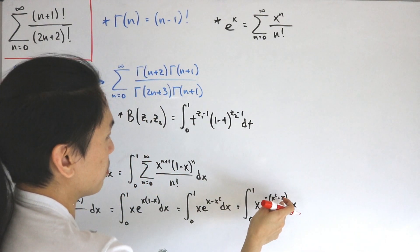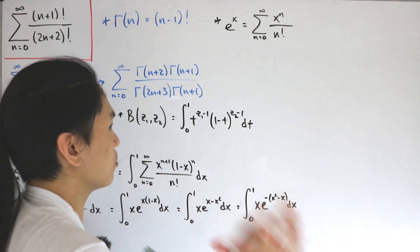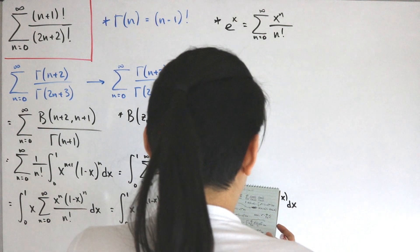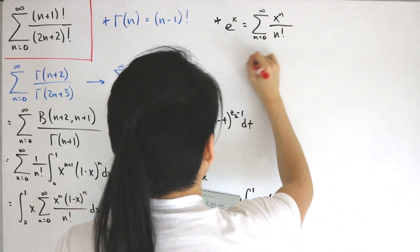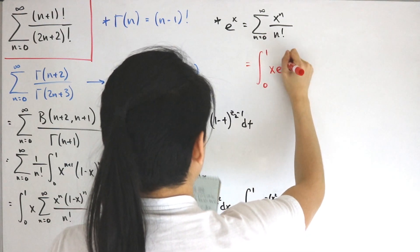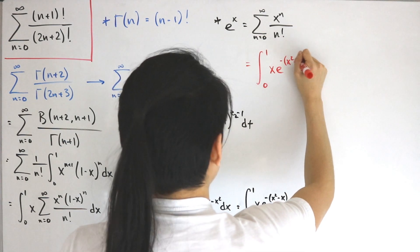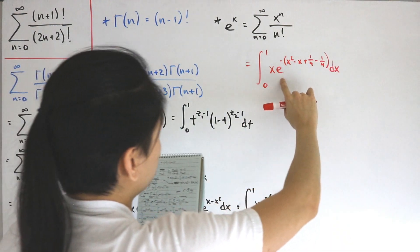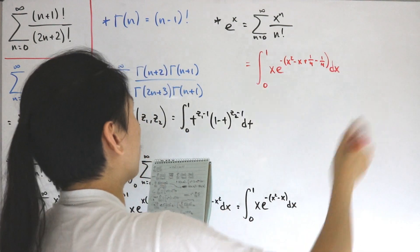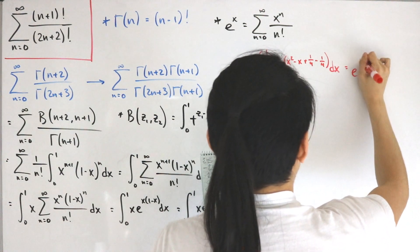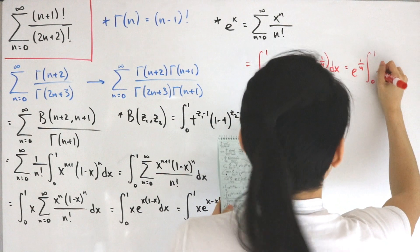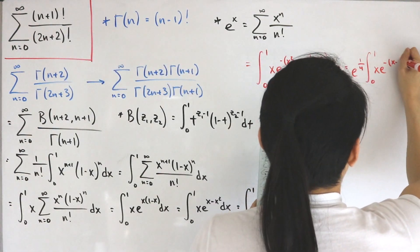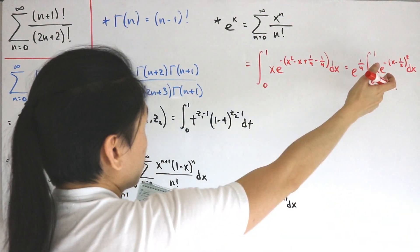Completing the square: take the coefficient of x (which is -1), divide by 2, and square it, giving 1/4. So x² - x = (x - 1/2)² - 1/4. The integral becomes the integral from 0 to 1 of x·e^(-[(x-1/2)² - 1/4]) dx. Factoring out e^(1/4) as a constant gives e^(1/4) times the integral from 0 to 1 of x·e^(-(x - 1/2)²) dx.